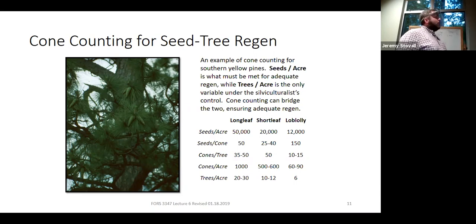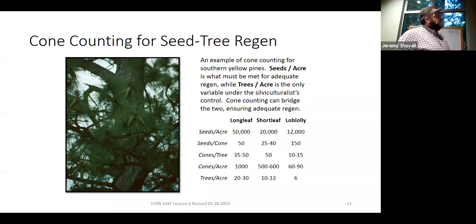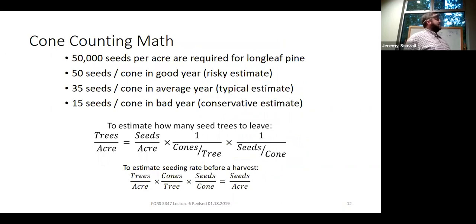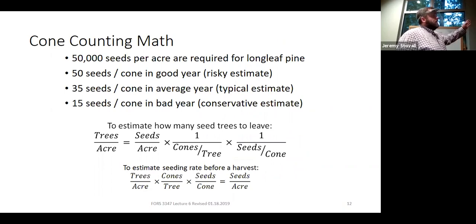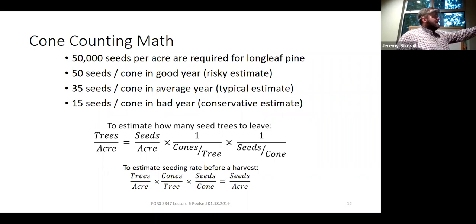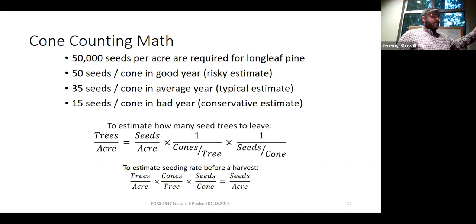You want to go out in April typically to see these cones and predict whether to get the seed tree cut done over the summer. Once you have all that, you can figure out how many cones per acre you have and how many trees per acre will produce all that seed. These equations are just ratios where cones cancel out with cones and seeds cancel out with seeds, leaving you trees per acre.